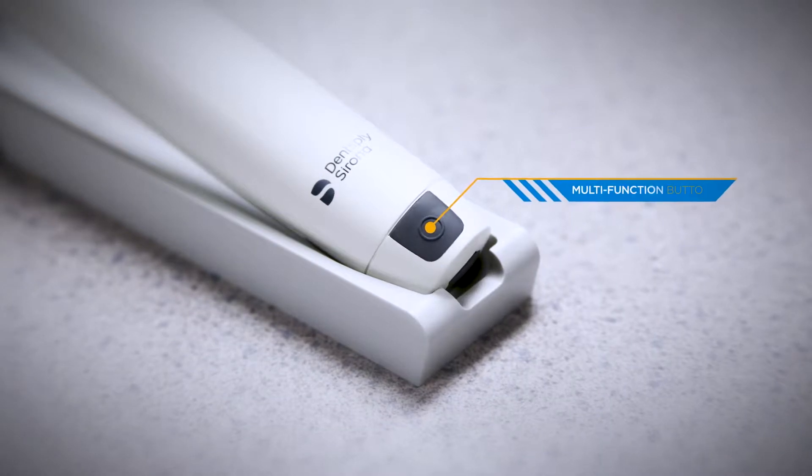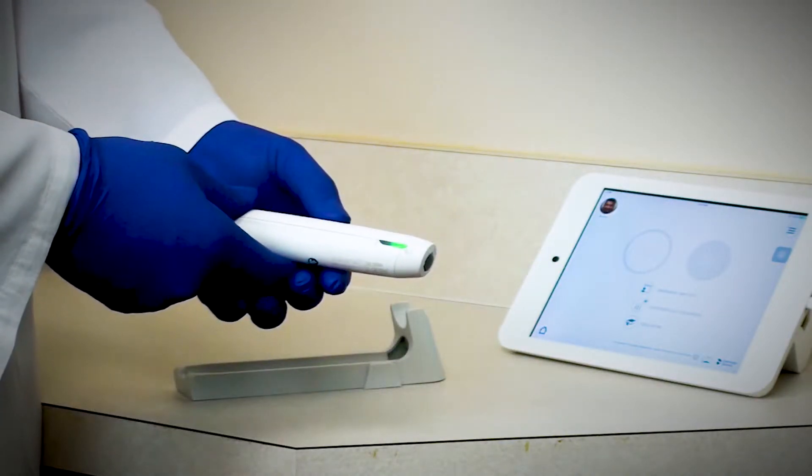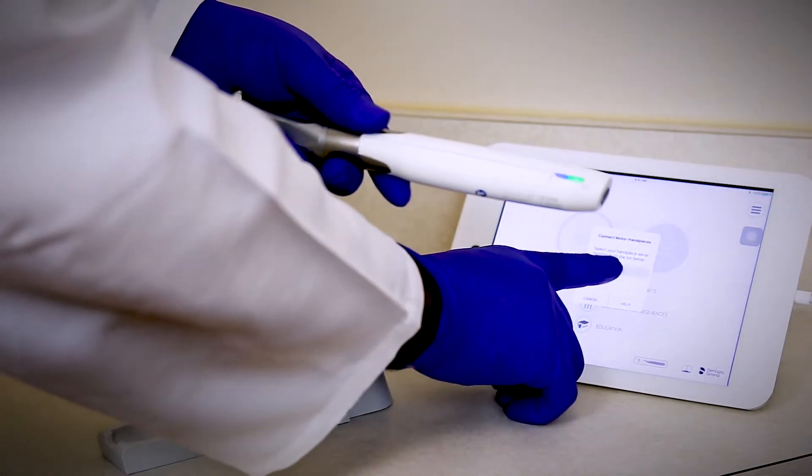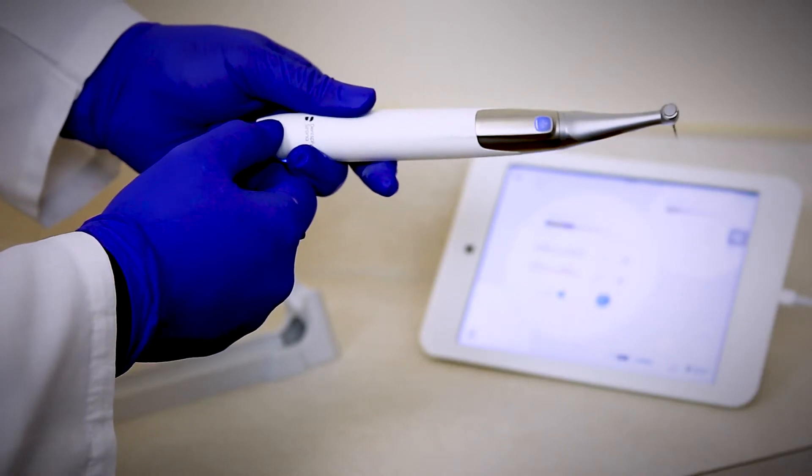At the bottom in the center is your multi-function button. This button is used to pair the motor handpiece to the application via Bluetooth, wake up the motor handpiece, and to select the next file during a treatment.